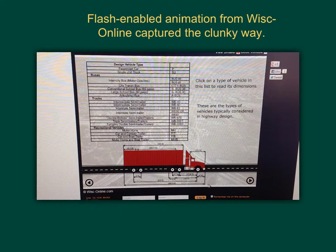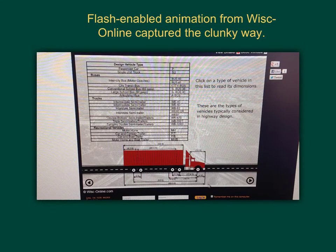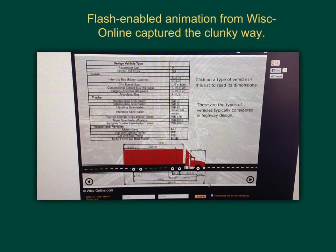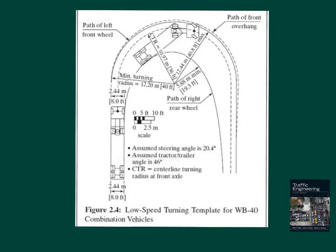Next we'll consider the turning characteristics of vehicles. There are two conditions under which a vehicle must make turns: low speed turns at less than or equal to 10 miles per hour, and high speed turns at speeds greater than that. Low speed turns are limited by the physical dimensions and steering mechanisms. Turning templates provide illustrations of the different dimensions involved in low speed turns, and there is a unique turning template for each design vehicle.